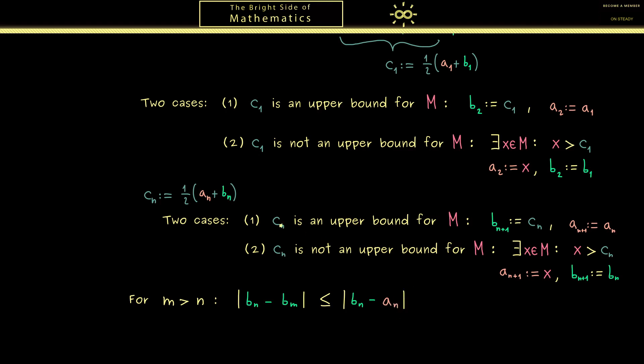Now we know by our construction with the middle point that we always cut the distance in half. Therefore we know that this is one half to the power n minus 1 times the starting distance b_1 minus a_1.